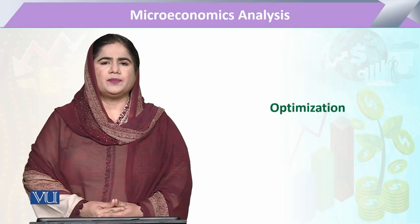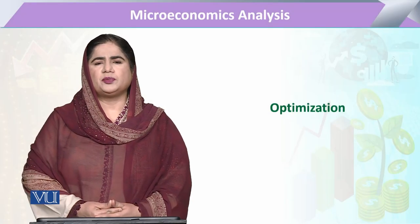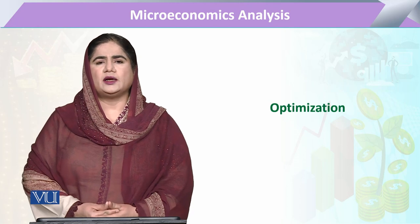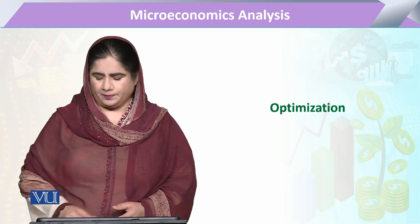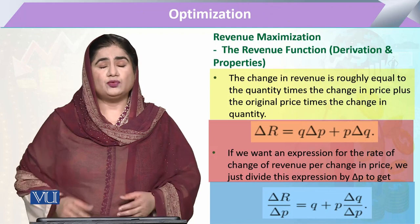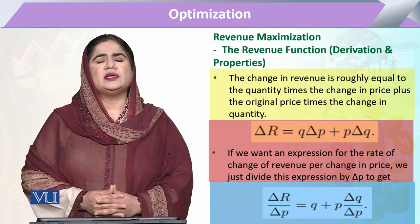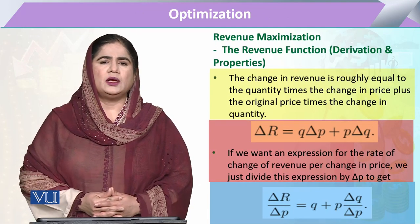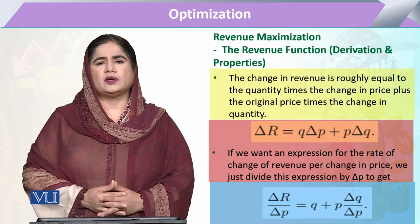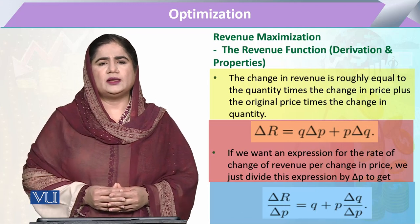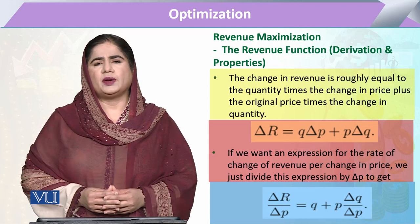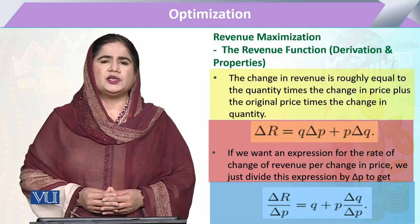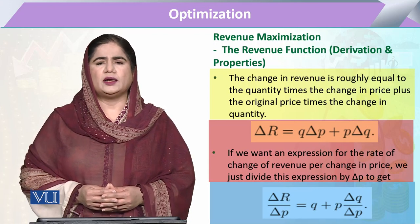Module 190 in the chapter of optimization — today's topic is the derivation of the revenue function. As we have previously seen, the revenue function is composed of two parts. One part is equal to the original price times the change in quantity, and the other